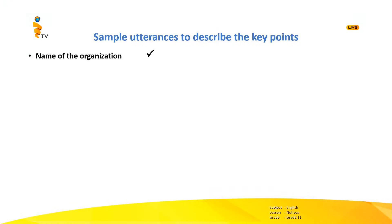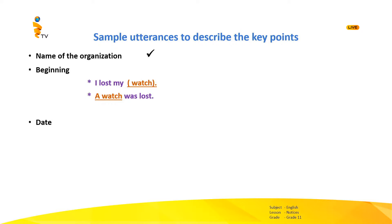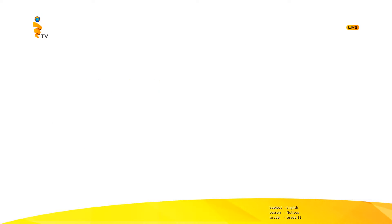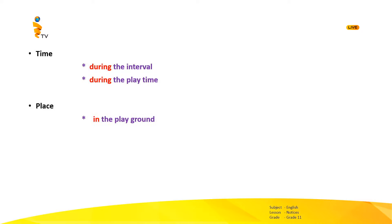For the name of the organisation, there is no problem as it depends — if you write your lost notice regarding a personal matter, you can mention your home address. For the beginning, example sentences are: 'I lost my watch', or in passive form, 'A watch was lost'. To mention the date, you must use the preposition 'on' — for example, 'on last Monday' or 'on 7th November 2020'. To mention the time, you can use the preposition 'during' — for example, 'during the interval', 'during the playtime'. To talk about the place, use the preposition 'in' or 'near' — for example, 'near the playground', 'in the playground', 'near the canteen'.